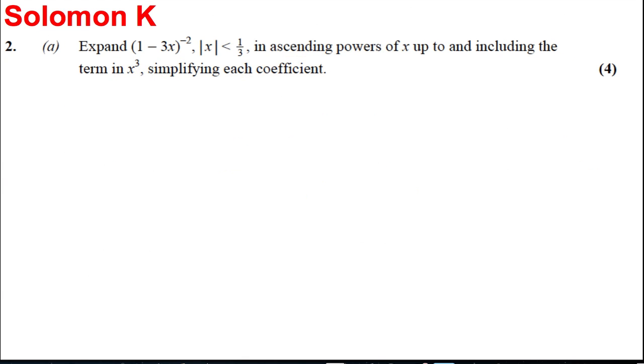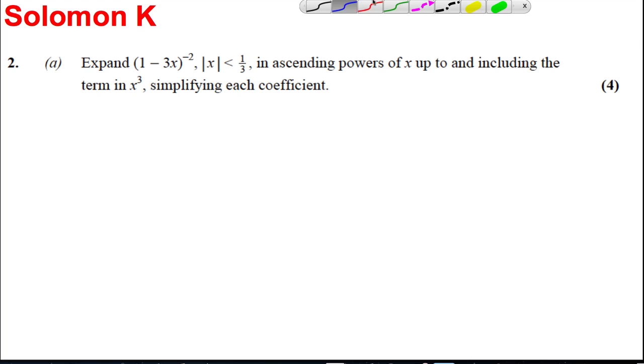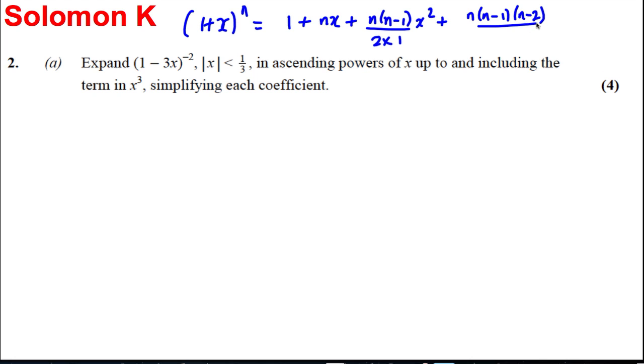Part A is the following. It's a nice simple binomial theorem. Remember the binomial theorem says (1 + x)^n is equal to 1 + nx + n(n-1)/(2×1) x² + n(n-1)(n-2)/(3×2×1) x³. I always find it handy to write that down myself. I suggest you get into the practice of doing that before you do a binomial.